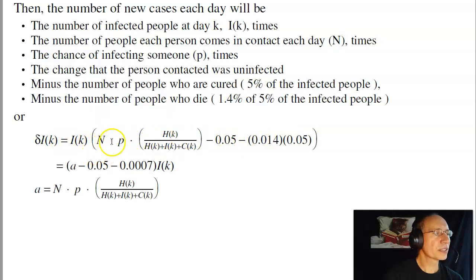Now let's group all this together and call it A. A is the number of people you come in contact with each day times the probability of infection times the percent of the people that are healthy. The probability that the person you come in contact with is healthy and susceptible.